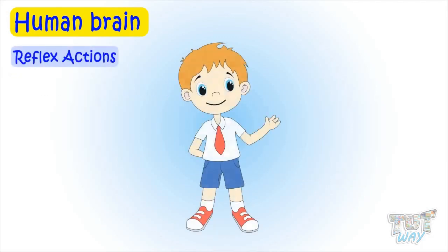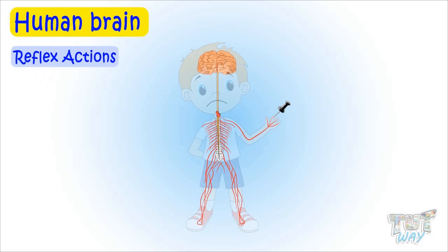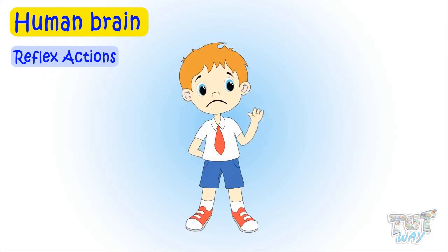For example, if someone is pricked by a pin or any sharp object, the nerve endings in that portion of the body at once pass the message to the spinal cord through sensory nerves. The spinal cord then passes this message to the brain. The brain interprets the message and sends the order back, and the body part is at once moved away. This is why we quickly remove our hand if it is hurt by something hot or sharp.